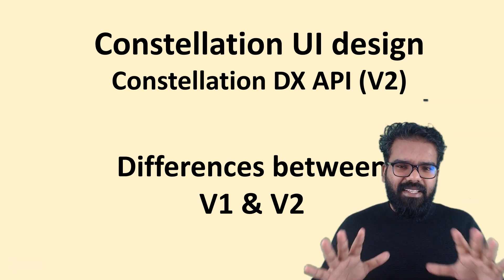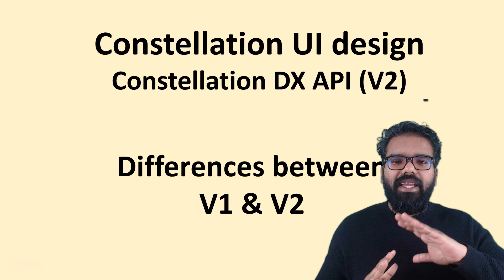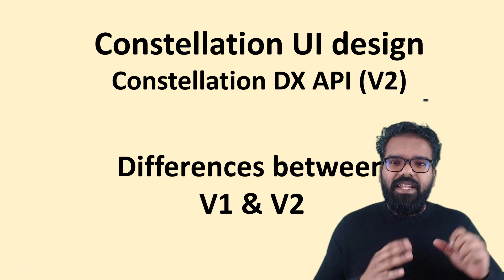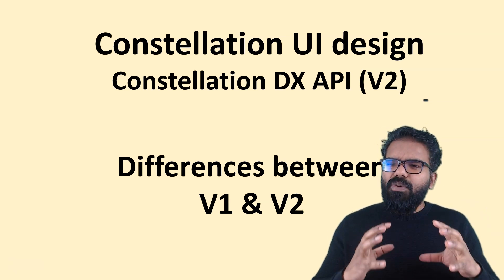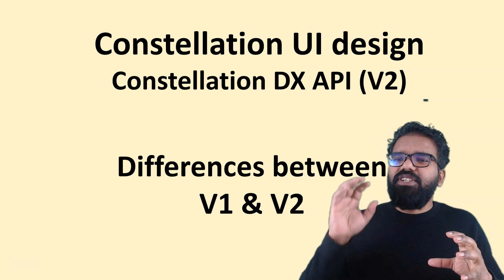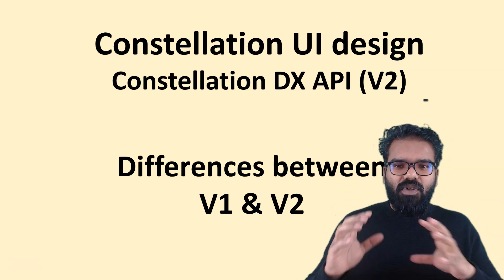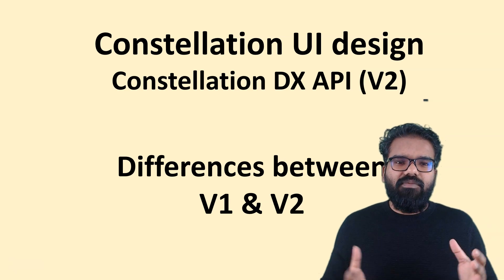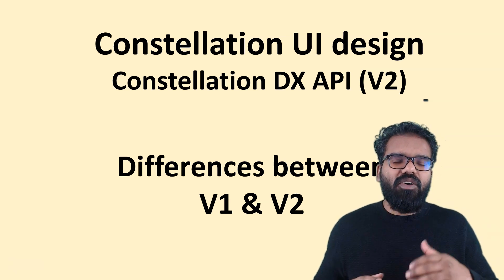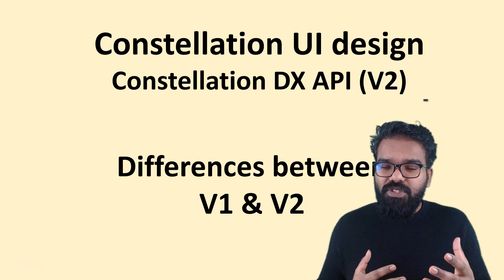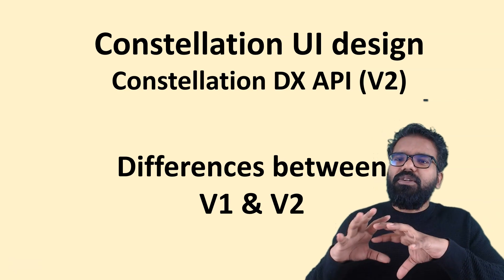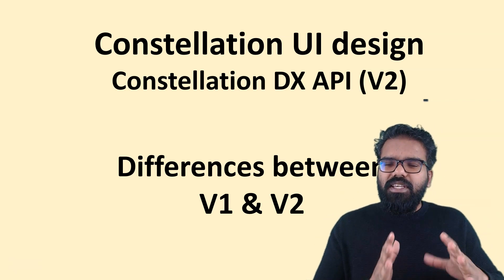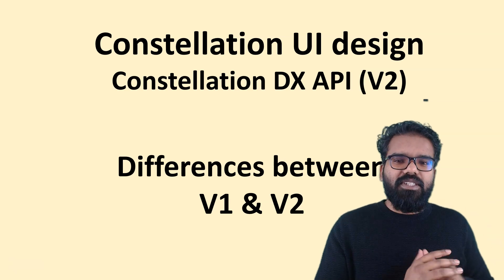First let's take an example. Think of it like any kind of traditional API — not the DX API, any traditional API. When do you have versions v1 and v2? Normally v1 will be the first version, and then when you have some kind of feedback, or if you want to add more features or change the structure, mostly we will go with version v2.